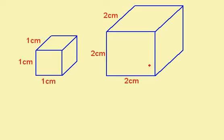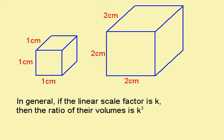This shape is an enlargement of this one, scale factor 2. If I calculate the volumes, I get that the volume of this one is 1 cm³, and the volume of this one is 2 times 2 times 2, which is 8 cm³. In general, we have if the linear scale factor is k, then the ratio of their volumes is k³. So in my example, the linear scale factor k was 2, and the ratio of the volumes was k³, which was 8.